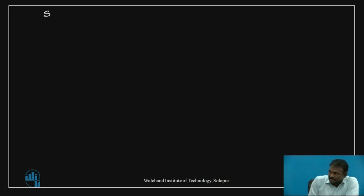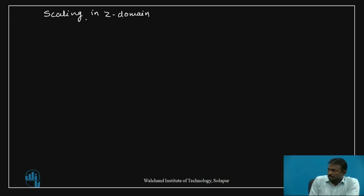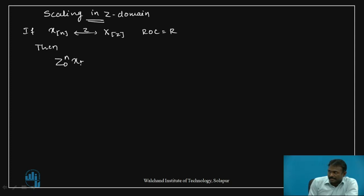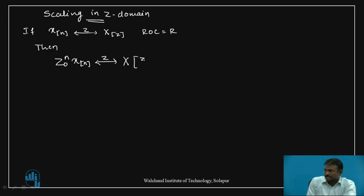Next, we discuss the property of scaling in the Z-domain. This property states that if X(n) is a discrete time signal and the Z-transform of X(n) is equal to X(Z) with ROC equal to R, then the Z-transform of Z0 to the power n times X(n) is equal to X(Z divided by Z0) with ROC equal to mod(Z0) times R.